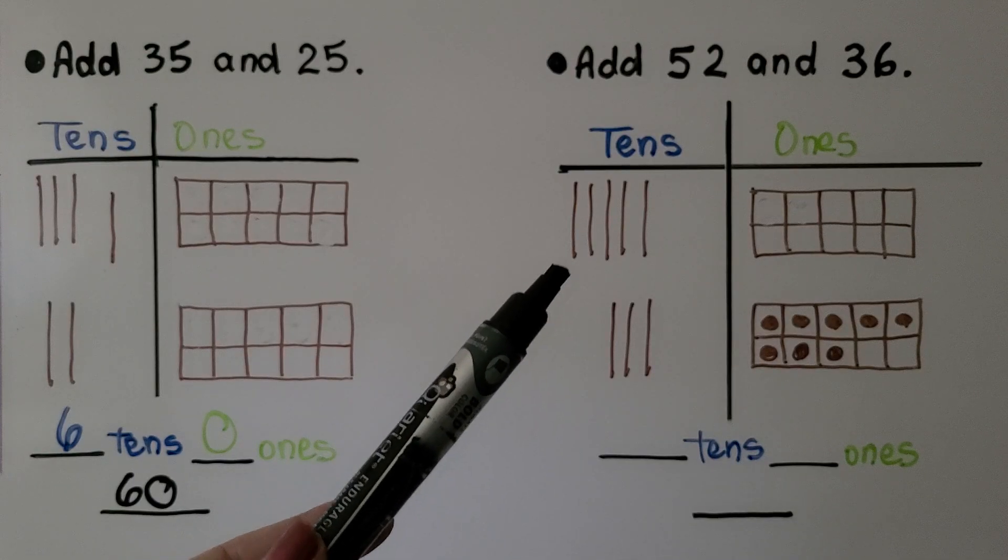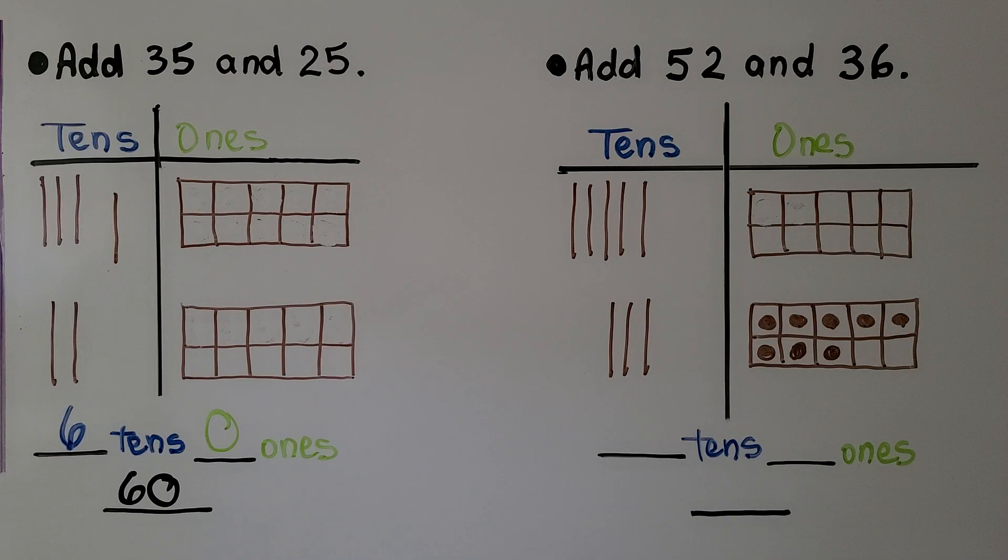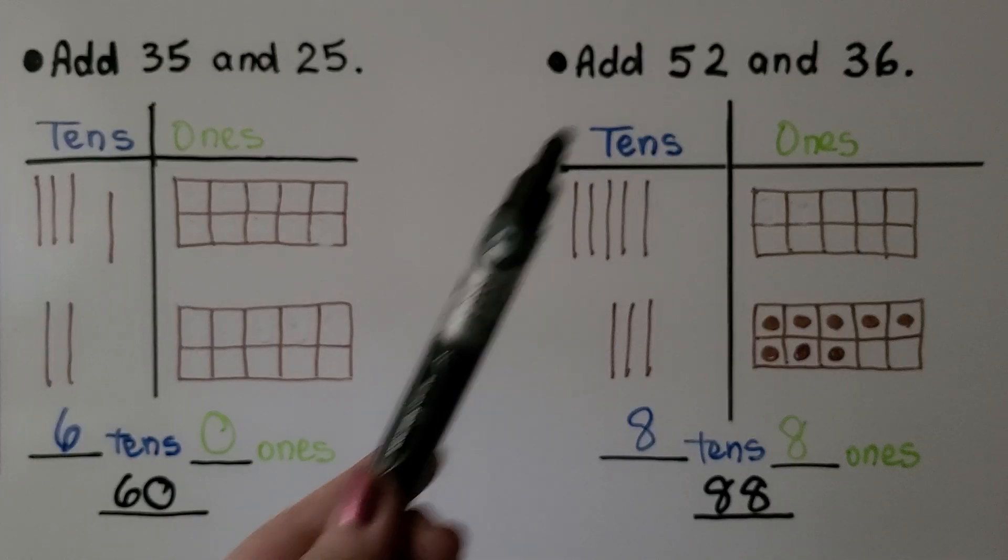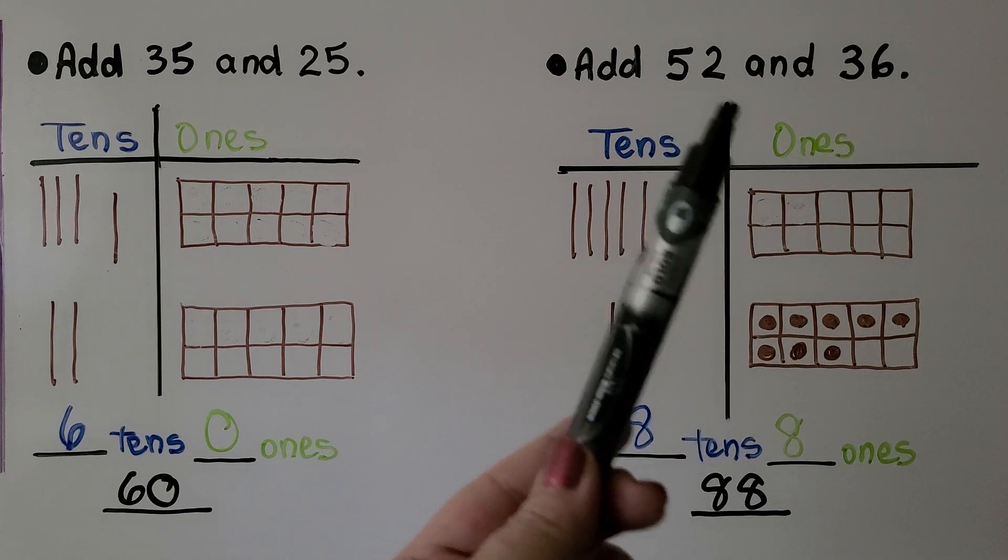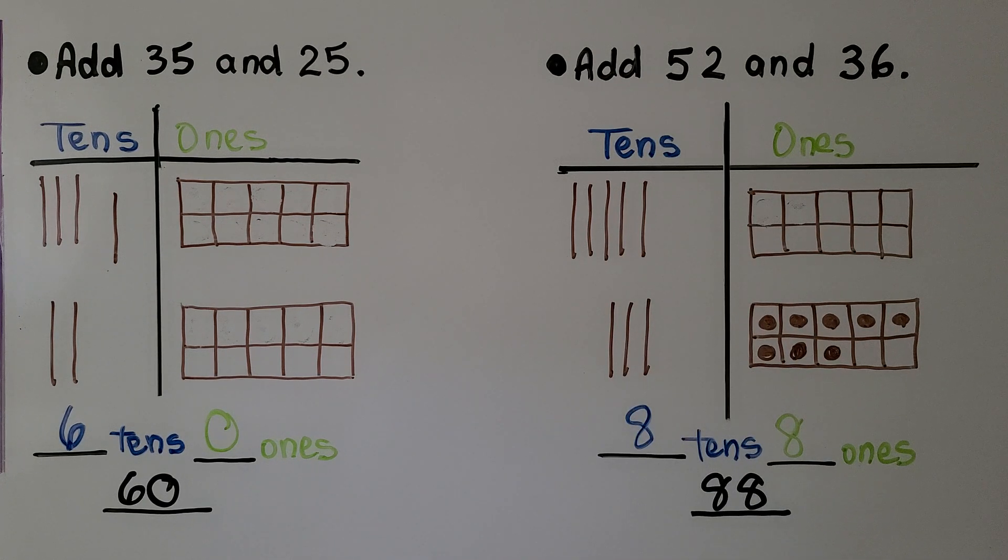So we count the tens. One, two, three, four, five, six, seven, eight. We have eight tens. Eight ones. That means we have eighty-eight. Sometimes when we add two-digit numbers, we won't need to regroup. When we added the six and the two, it equaled eight. So fifty-two plus thirty-six is equal to eighty-eight. We didn't need to regroup.